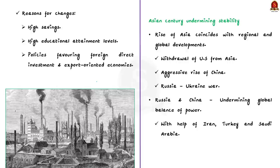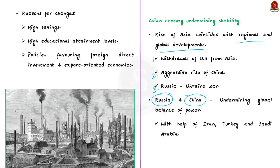All these factors are responsible for the emergence of an Asian century. But according to the author, the stability and prosperity will be undermined by the Asian century, because the geopolitical and economic rise of Asia coincides with several regional and global developments: the withdrawal of the US from much of Asia, the aggressive rise of China, and also the Russia-Ukraine war. These three things undermine the stability hoped for by India. Along with this, in Asia two major powers — Russia and China — are already trying to undermine the global balance of power with several regional powers such as Iran, Turkey and Saudi Arabia. So the author says Asia may be headed towards more global prominence, but instability will definitely be there.